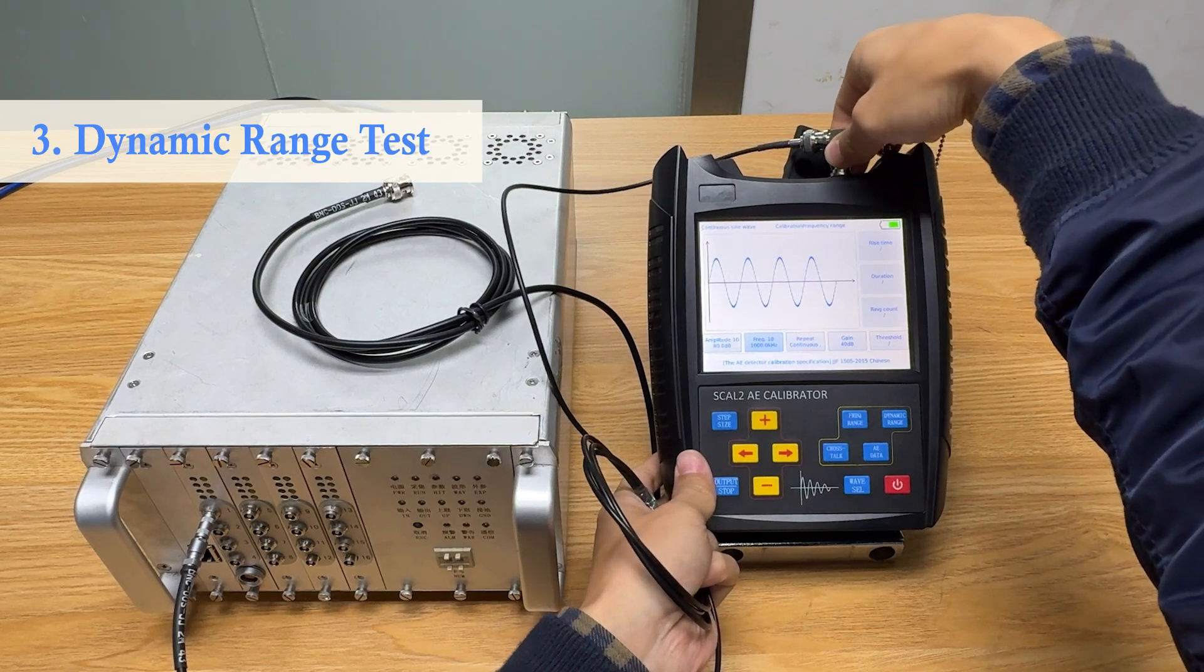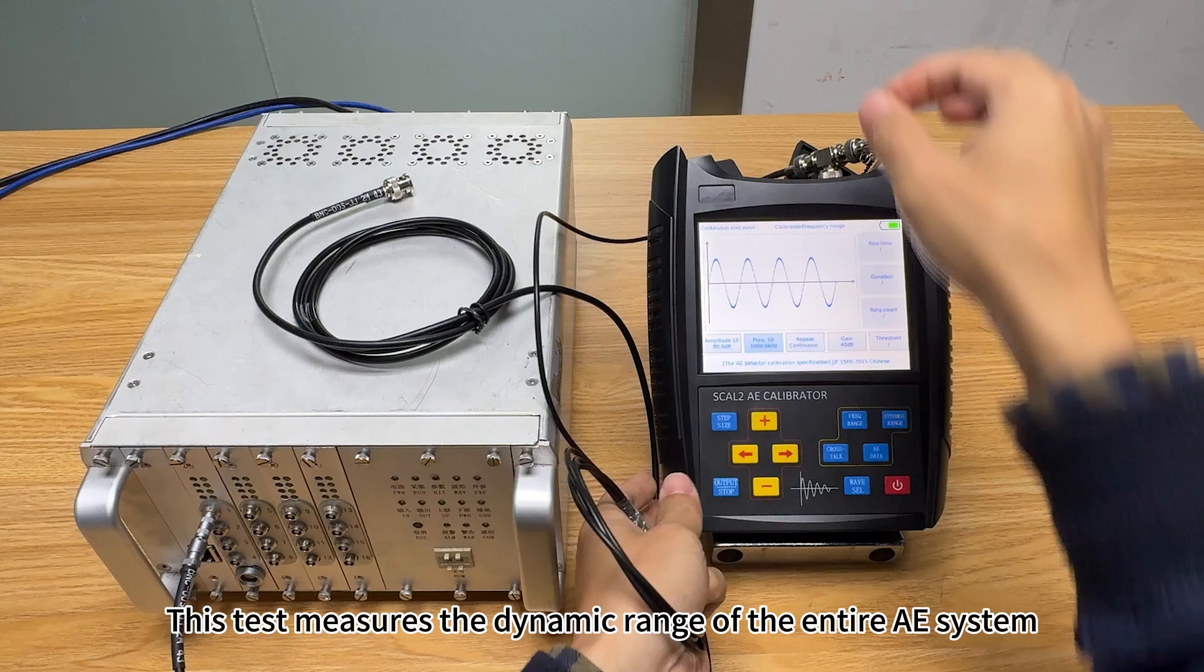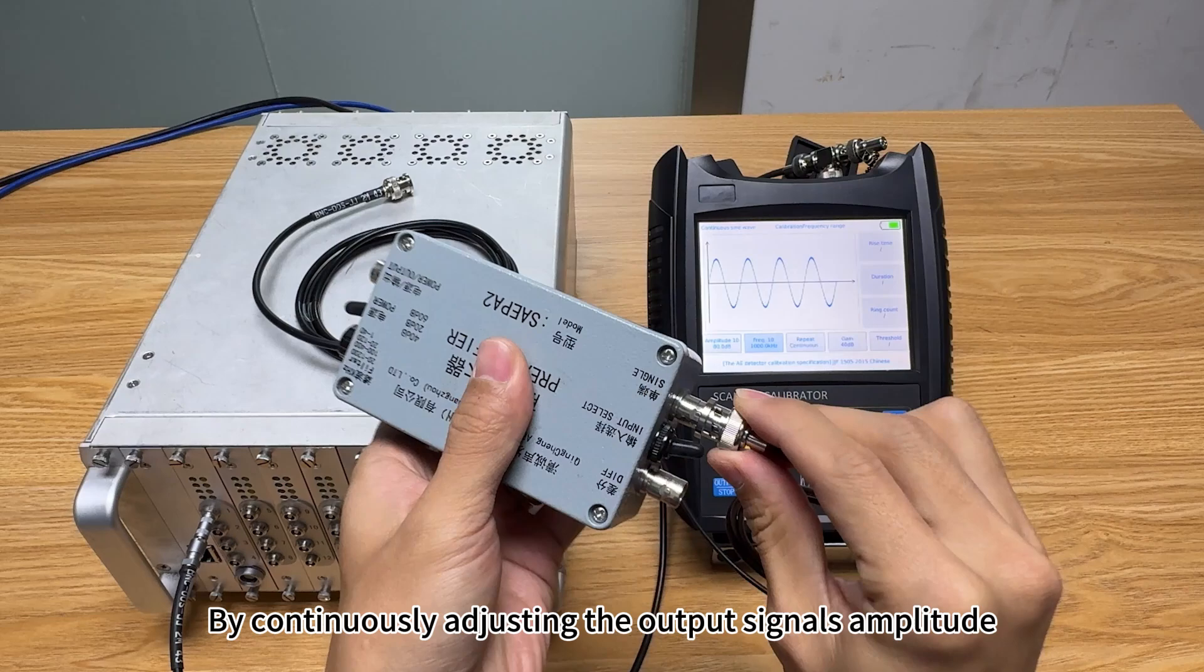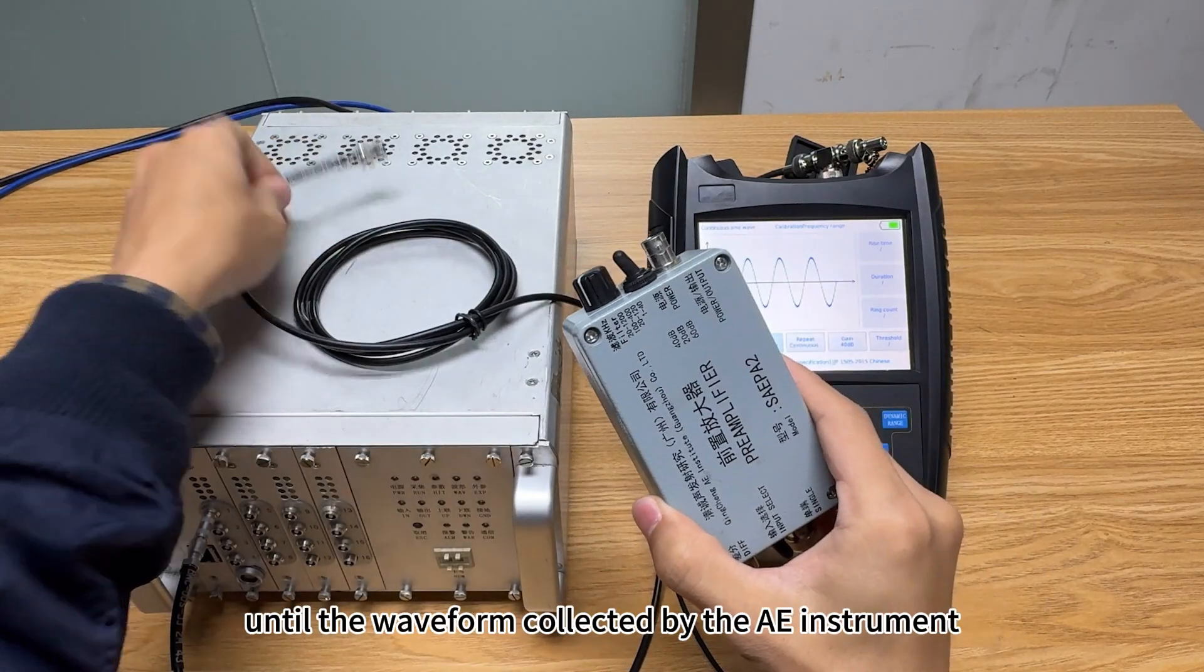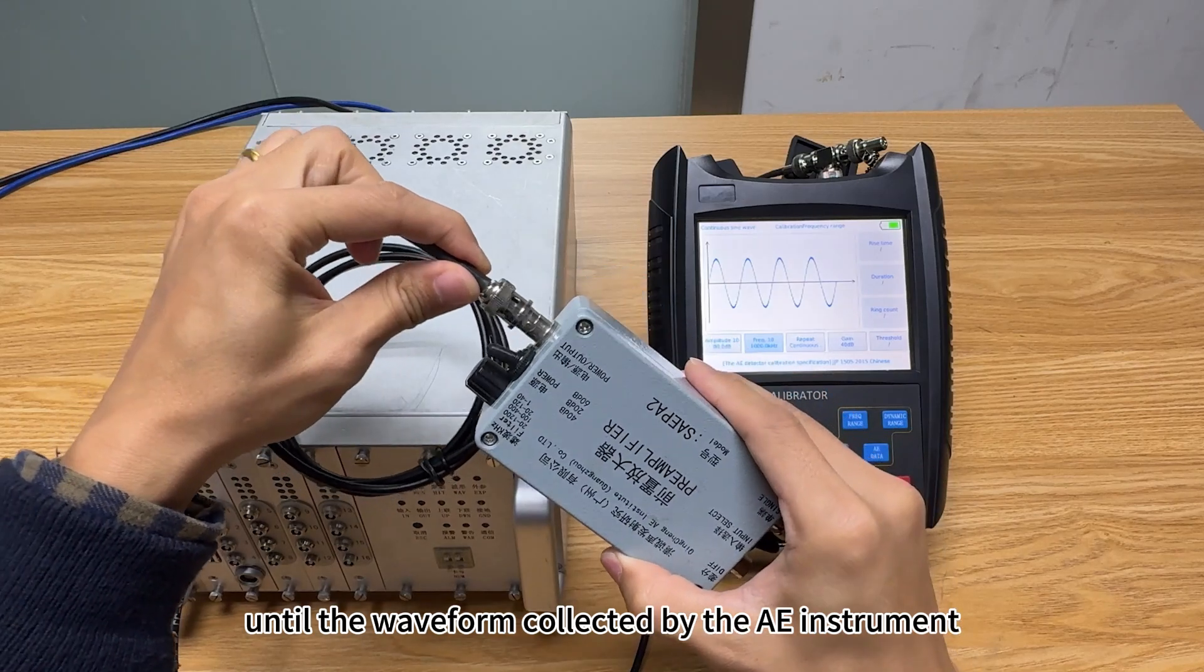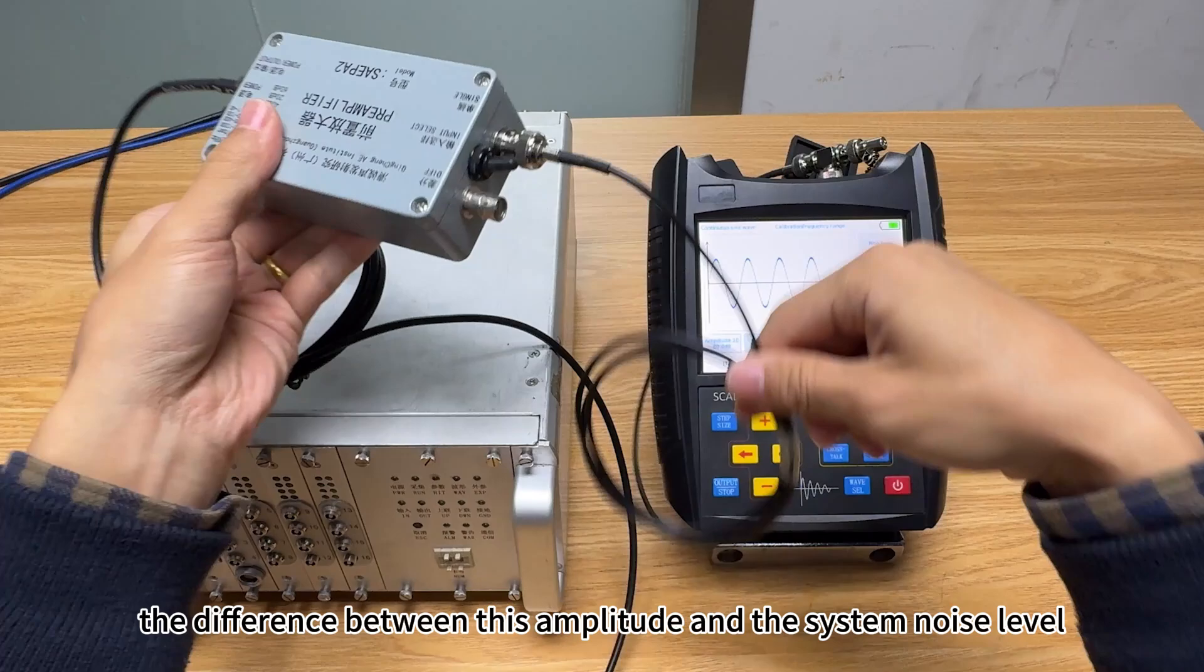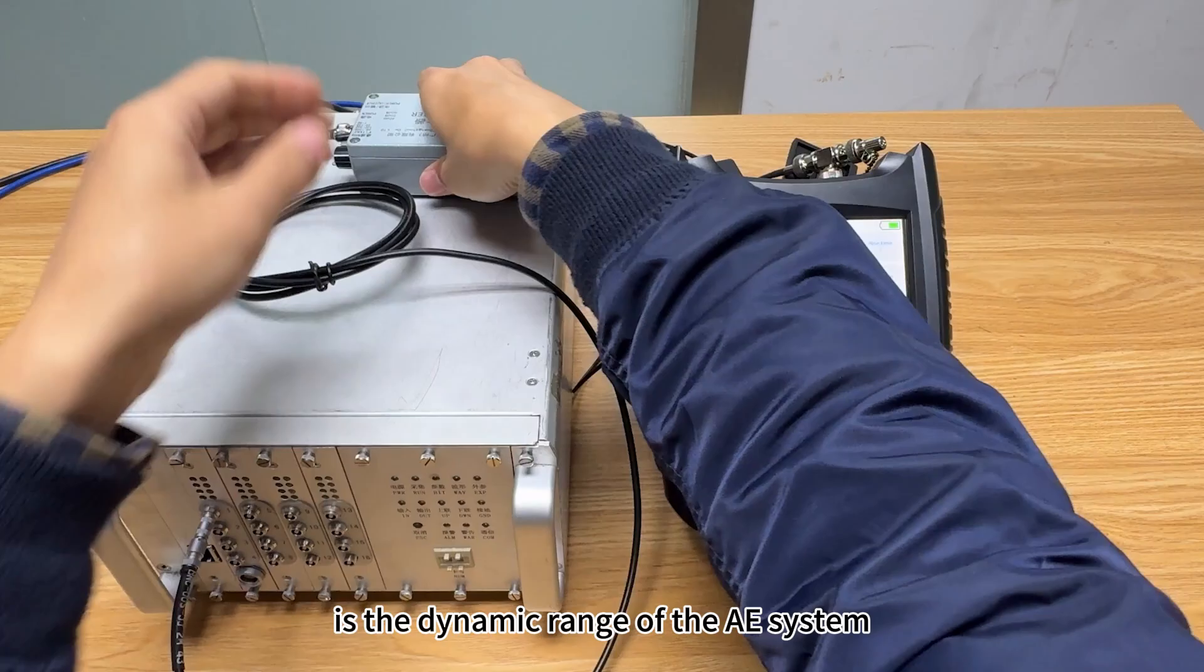Dynamic Range Test. This test measures the dynamic range of the entire AE system, so a pre-amplifier must be connected. By continuously adjusting the output signal's amplitude until the waveform collected by the AE instrument starts to show significant distortion, the difference between this amplitude and the system noise level is the dynamic range of the AE system.